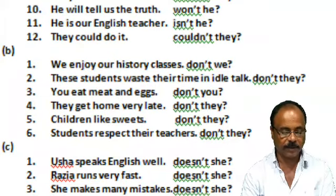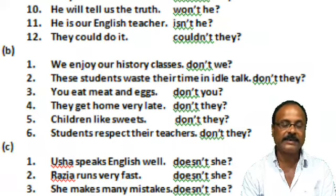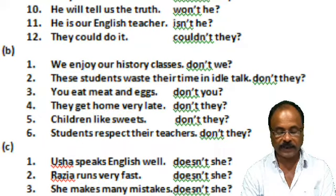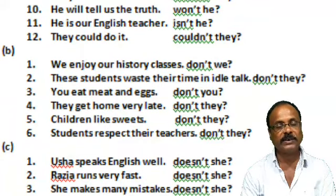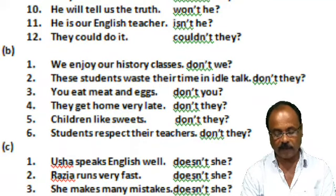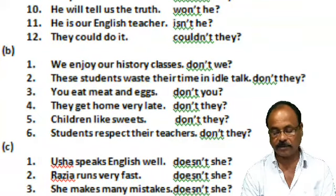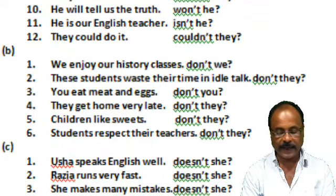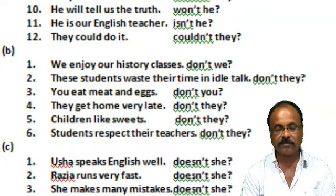Then comes Group B. Number 1: 'We enjoy our history classes.' — 'Don't we?' Number 2: 'The students waste their time in idle talk.' — 'Don't they?' Number 3: 'You eat meat and eggs.' — 'Don't you?'